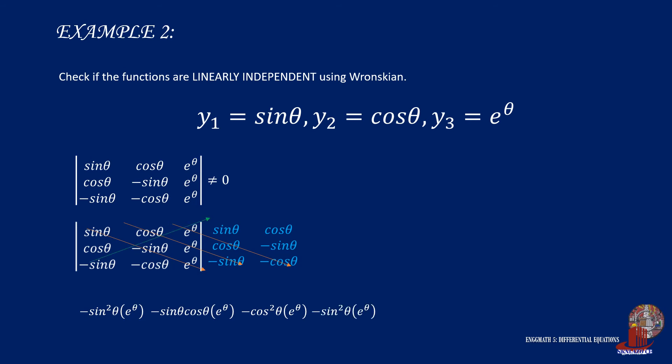We then subtract the upward diagonals. Negative sin theta times e raised to theta gives minus positive sin squared theta times e raised to theta. We also have negative sin theta times e raised to theta, and e raised to theta times cosine theta times cosine theta gives negative cosine squared theta times e raised to theta. We can cancel out the sin theta cosine theta times e raised to theta terms.